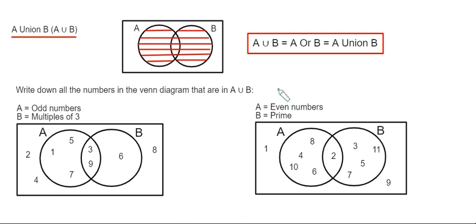And the symbol that you use for the union looks a little bit like the letter U. And the numbers that we're looking for are shown in the diagram here. So it's the shaded part of the Venn diagram.